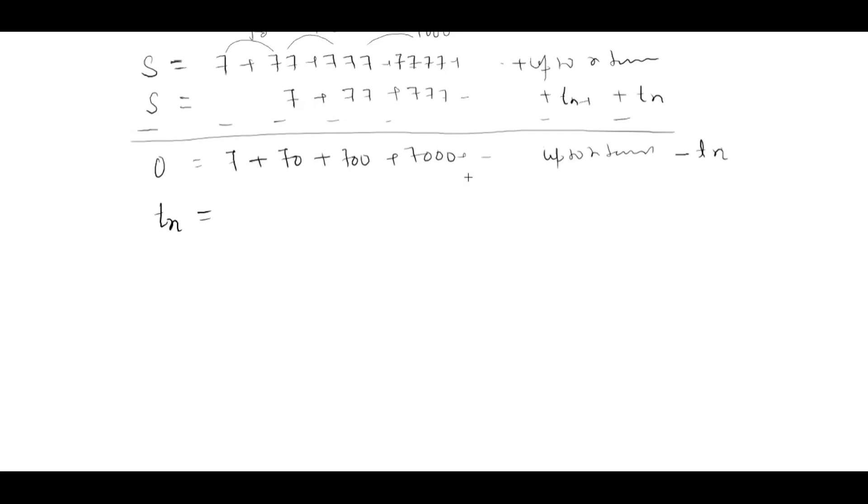So t_n becomes 7 plus 70 plus 700 plus 7000 and so on. This is a GP where the first term is 7 and common ratio is 10, so this will be 10 to the power n minus 1 divided by 10 minus 1. This is 7 by 9 times 10 to the power n minus 1. This is the nth term, not the summation.